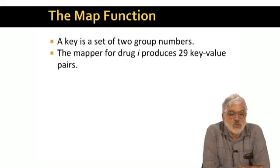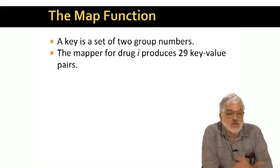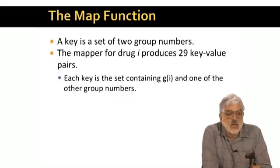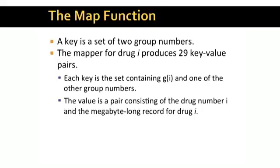Now, for each drug i, we produce 29 key value pairs. And for each group number besides g(i), the group drug i belongs to, we have one key value pair whose key consists of g(i) and the other group number. And in all 29 key value pairs, the value is the record associated with drug i, coupled with the number i itself.